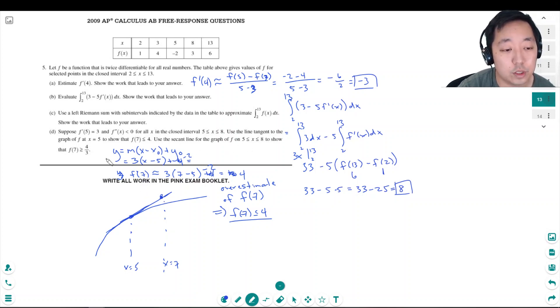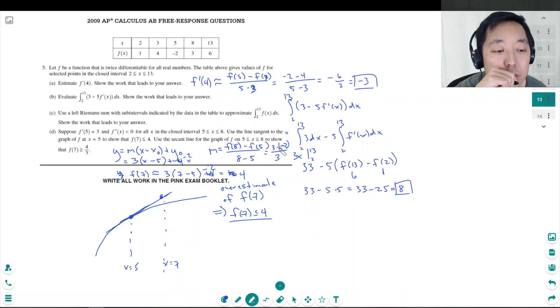Now use the secant line for the graph to show that f of 7 is greater than or equal to 4 thirds. So now we want to use a secant line slope. From 5 to 8, the slope of the secant line is f of 8 minus f of 5 over 8 minus 5. That's 3 minus negative 2 divided by 3. That's 5 thirds.